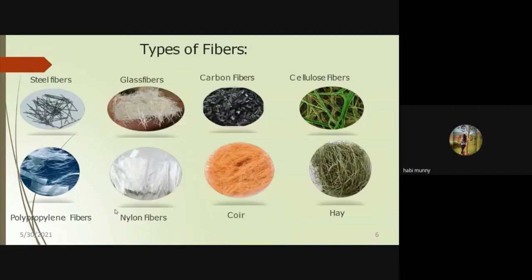Types of fibers include steel, glass, carbon, nylon, and polypropylene — these are synthetic fibers. Cellulose, hay, and coir are examples of natural fibers. Images of these fiber types are shown for reference.